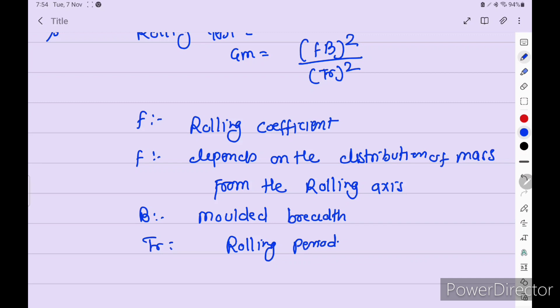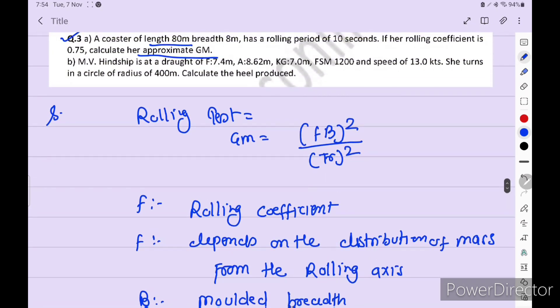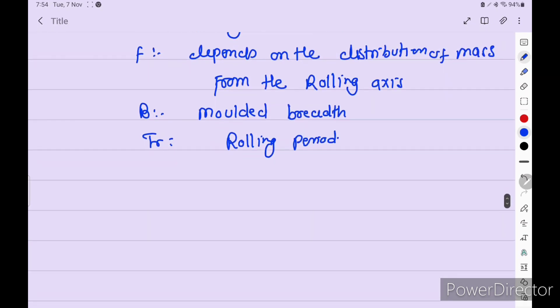If this type of numerical is coming, we need to find GM. Our solution is: GM equals FB upon TR squared. F is coefficient, rolling coefficient. So rolling coefficient given is 0.75.